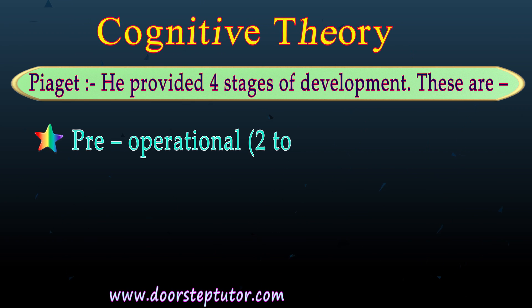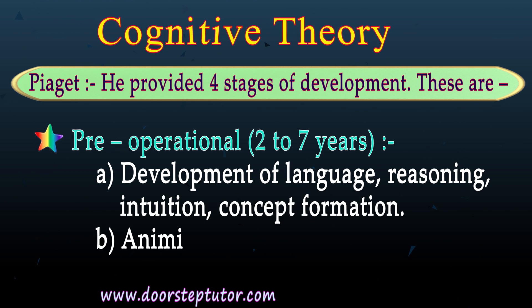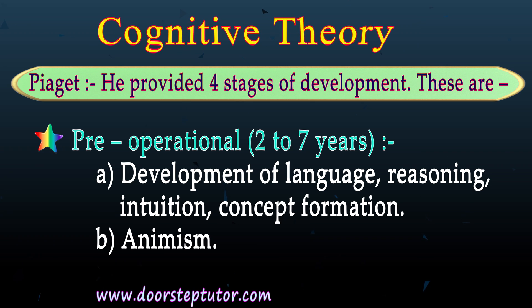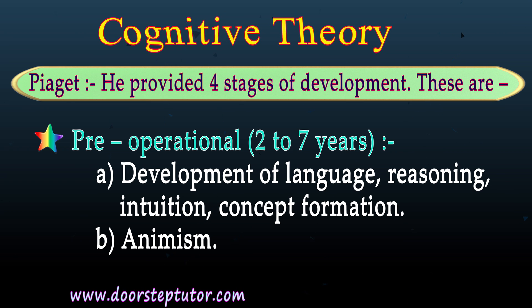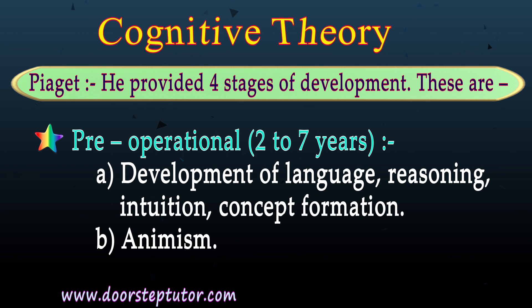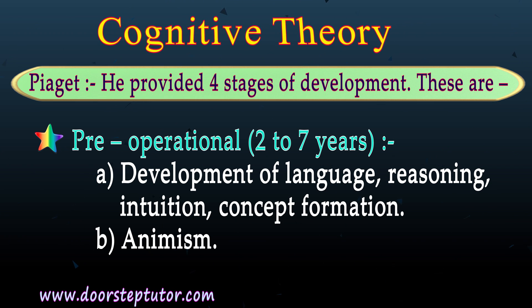The second is the pre-operational stage, from age 2 to 7. The pre-operational stage is characterized by the development of language, reasoning, intuition and concept formation. The pre-operational stage is also characterized by animism.